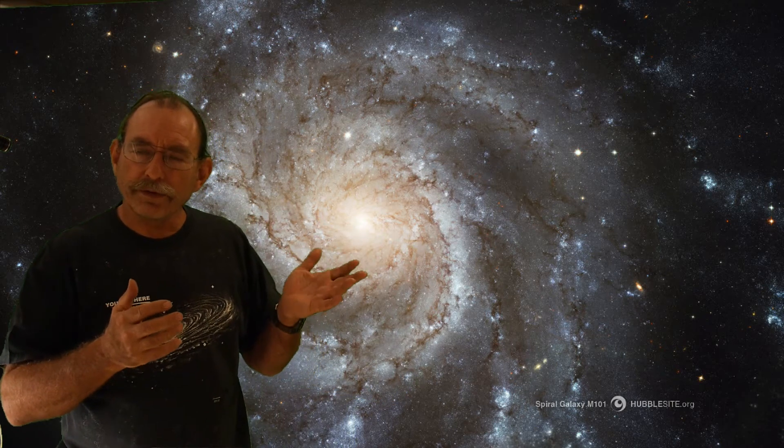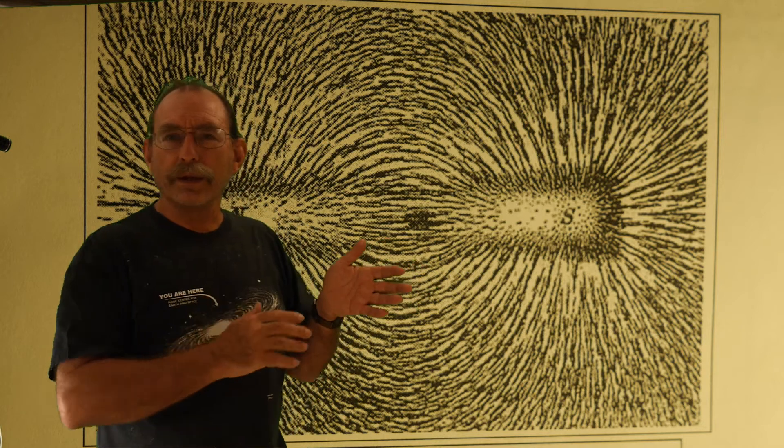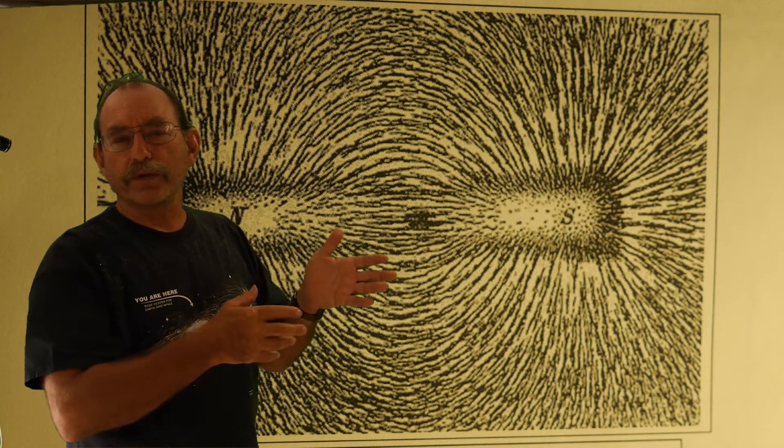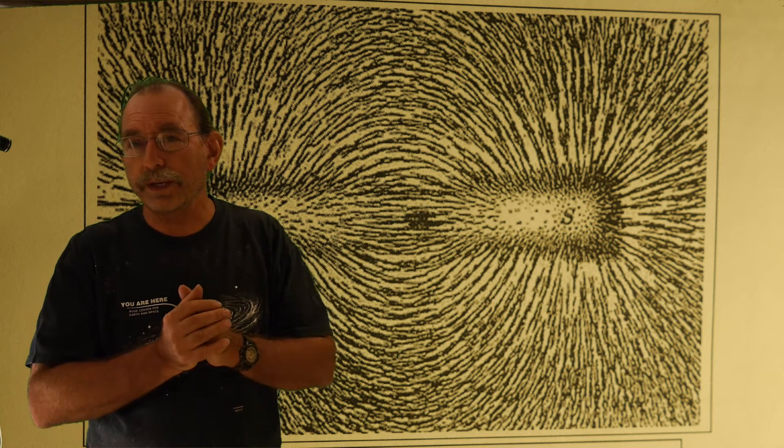This is probably best illustrated in the following diagram with a bar magnet with a piece of paper over top of it in which metal filings have been spread across. This drawing is courtesy of Wikipedia.